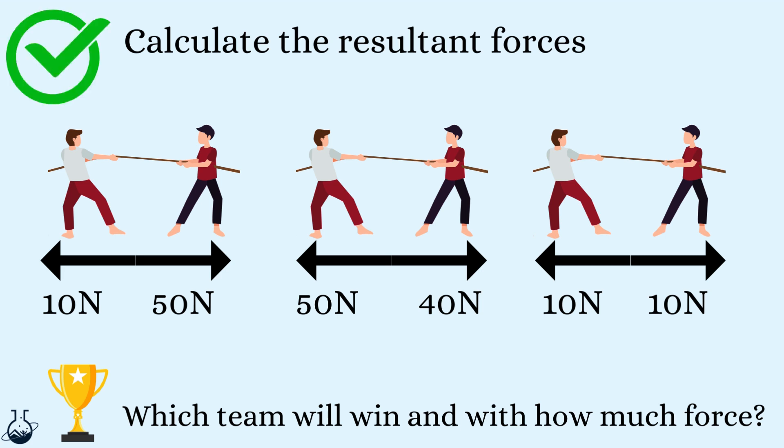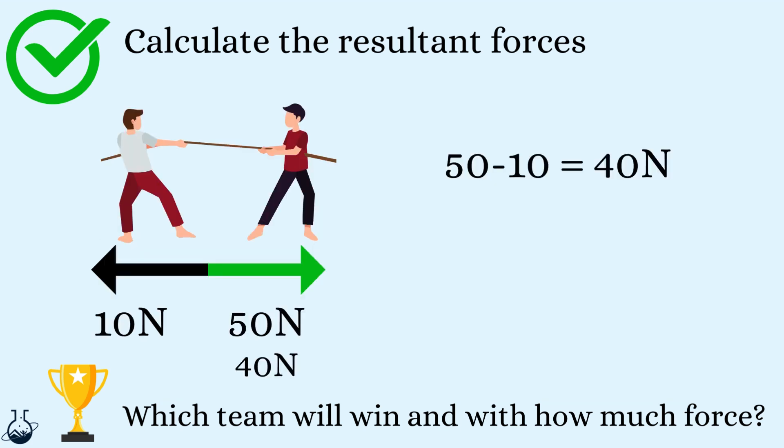Let's see how we did with this activity. Marking pens ready. The tug of war on the left shows there is a greater force of 50 Newtons on the right and only 10 Newtons pulled to the left. So the team on the right will win with a resultant force of 40 Newtons.